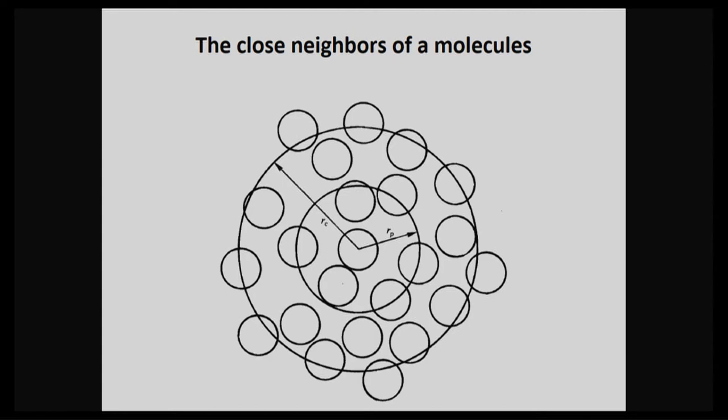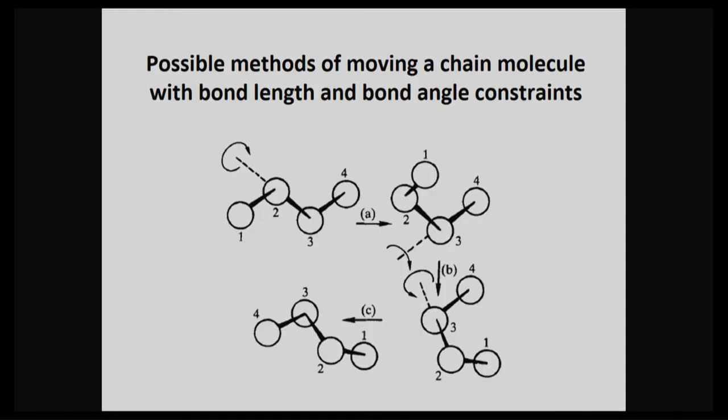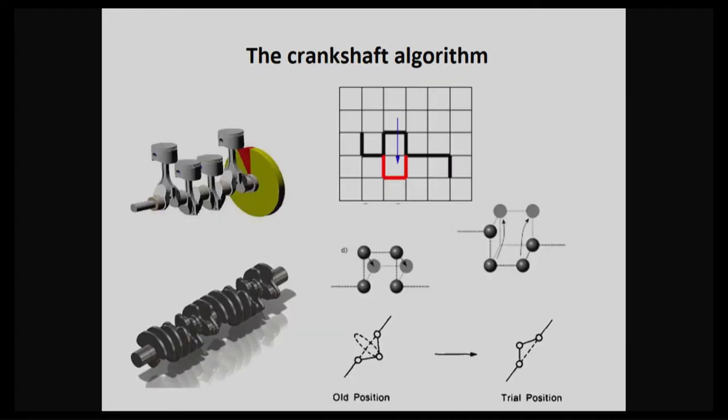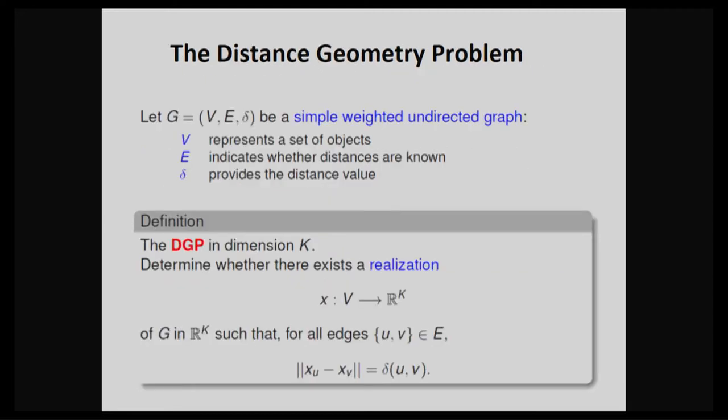In general, for a molecular system, you don't have this kind of fractal geometry approach. Usually you have to do some random translation, random rotation. Try to rotate some bonds or Crank-shaft algorithm to do that. And this is the algorithm to generate random vectors on the sphere.